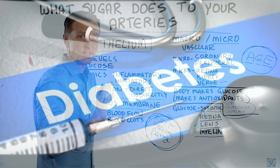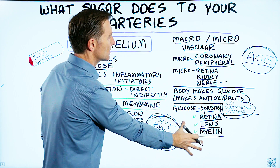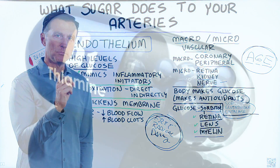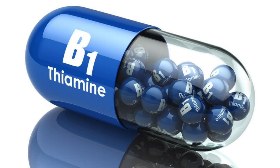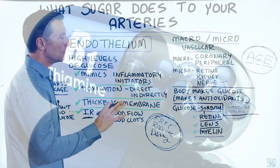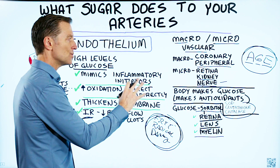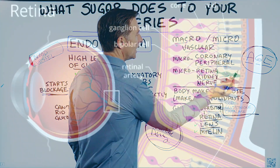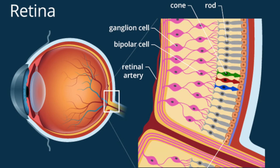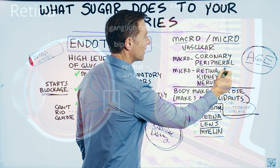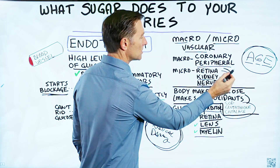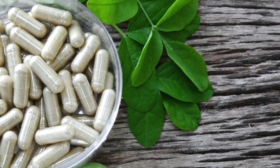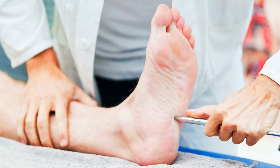Another really good thing to take for some of these conditions is benfotiamine — a fat-soluble B1 that can protect against peripheral neuropathy from high sugar complications, and also the kidney and retina to a certain level. To be totally transparent, the research on these was mainly done in animals, not humans. But I personally used benfotiamine with a lot of clients for peripheral neuropathy and have seen amazing results.